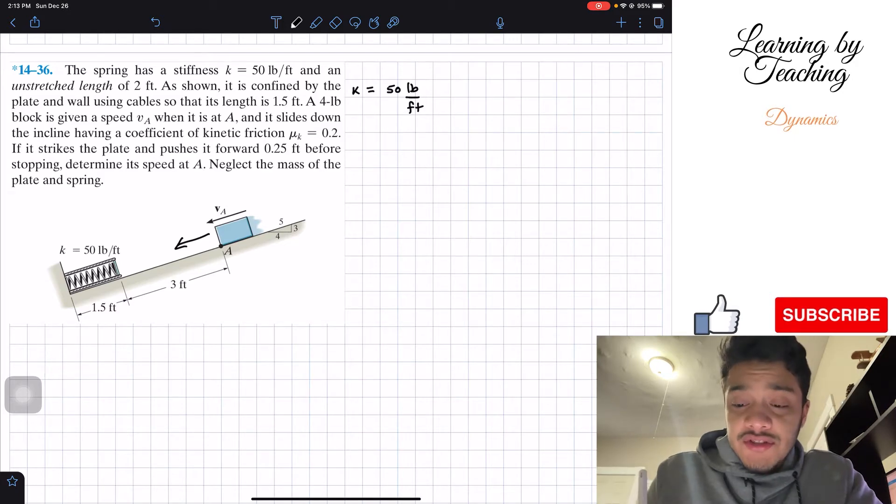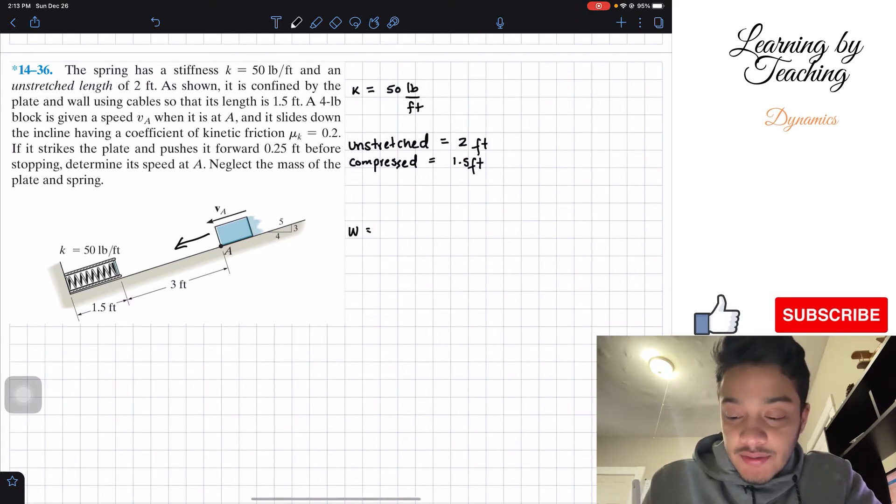So let's start with our k equals 50 pounds per foot. Then we're given that we have an unstretched length of 2 feet. Then we're given that we're actually compressing, so compressed is equal to 1.5 feet.